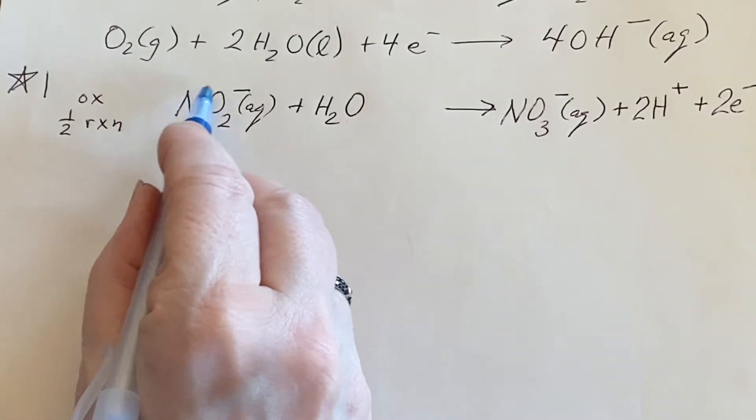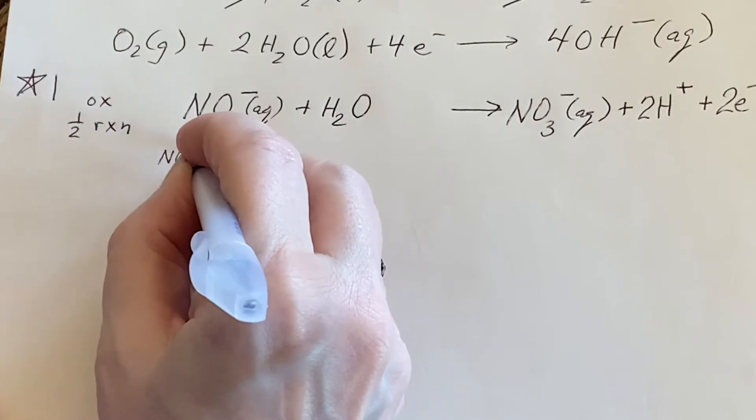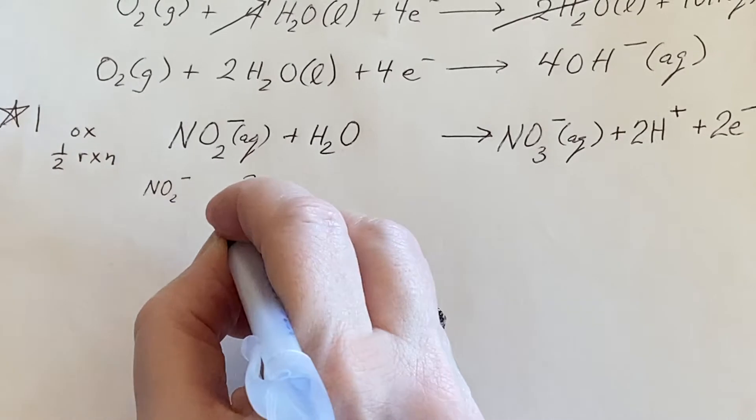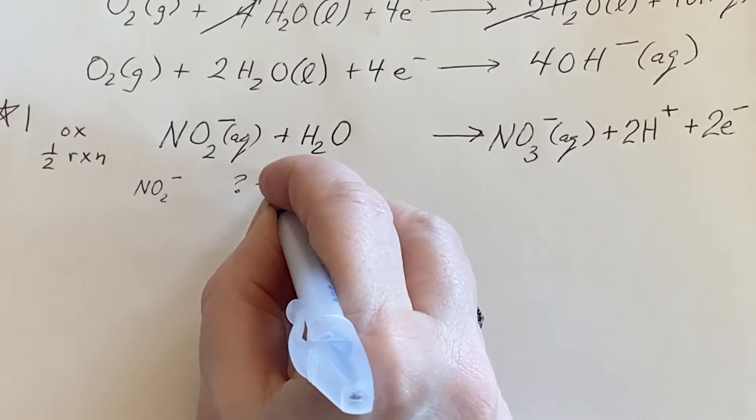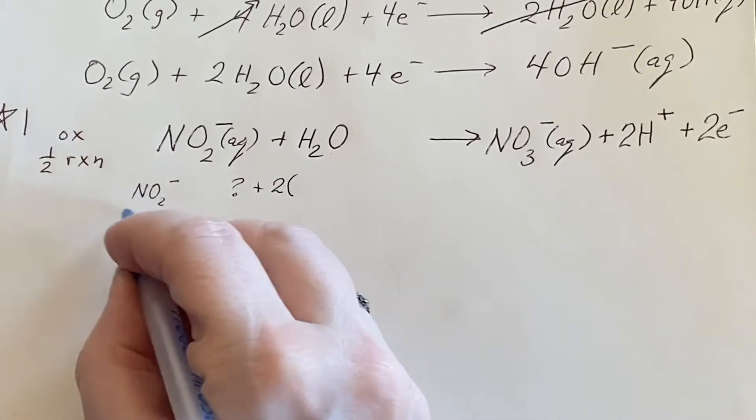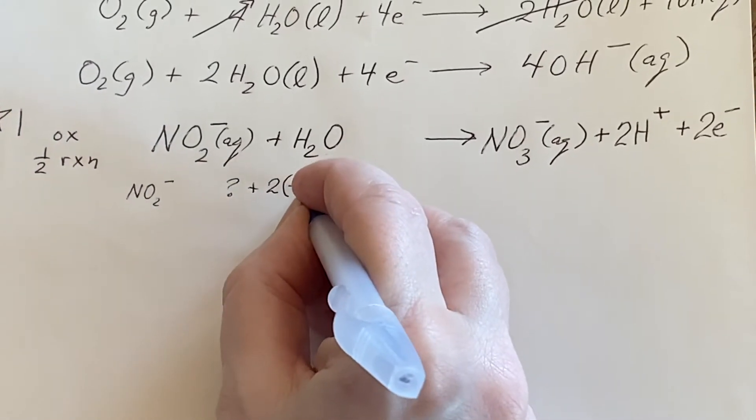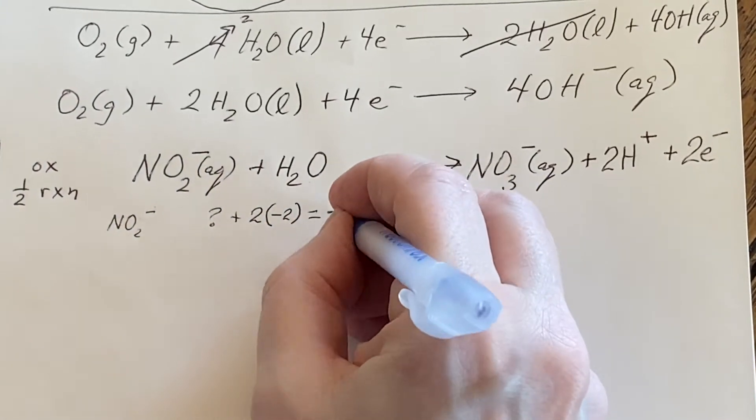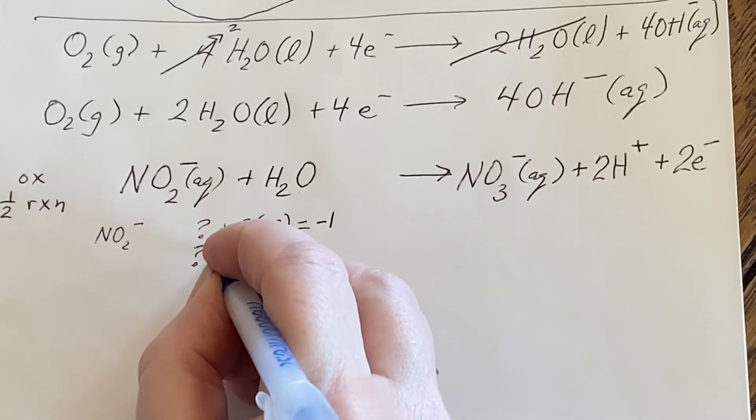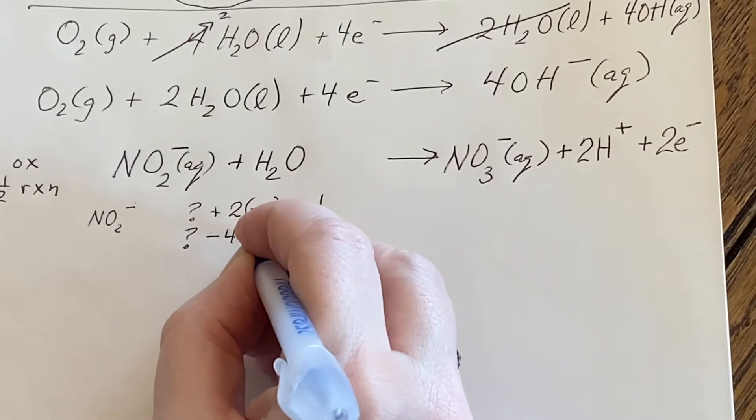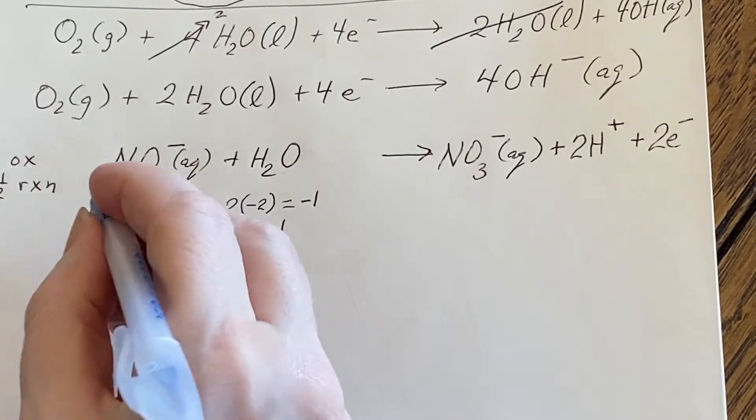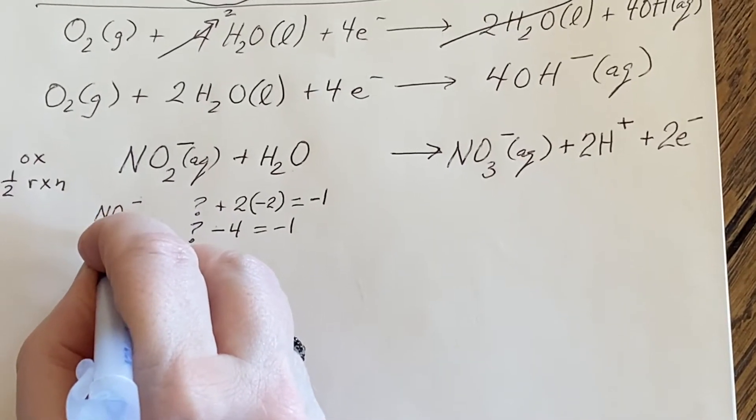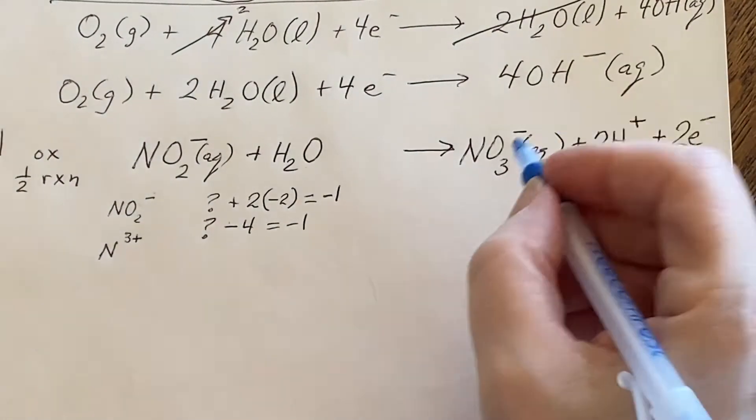If I am trying to look at this NO2-, I don't know the oxidation state of the nitrogen. That's what I'm wondering what it is. But I do know that there are two oxygens and oxygen in a compound is almost always a negative two. And then I also know that overall it should have a single minus charge. So I'm sitting here going, I need my number and that number minus four equals negative one. Oh, so my oxidation state of nitrogen over here is a plus three.